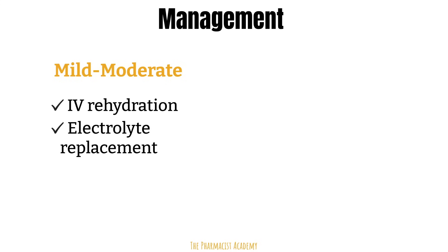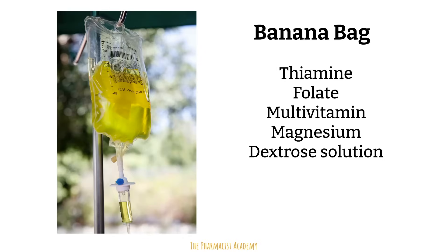Alcoholics are at risk of a condition called Wernicke's-Korsakoff syndrome, which is characterized by brain damage due to deficiency in thiamine, a vitamin that is poorly absorbed from the gut in alcoholics. To mitigate this, we give patients something known as a banana bag. Here is a picture to show you what it looks like and what it contains. The yellow color is how it got its name, which is due to the thiamine and multivitamin.